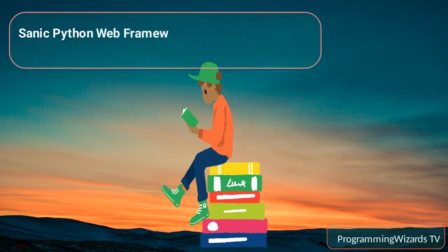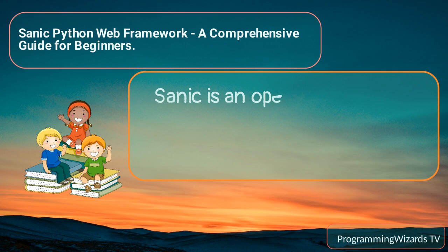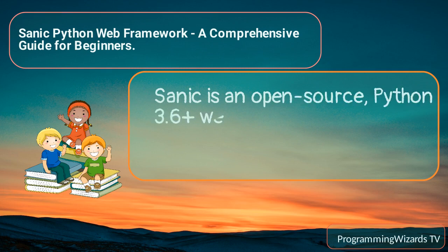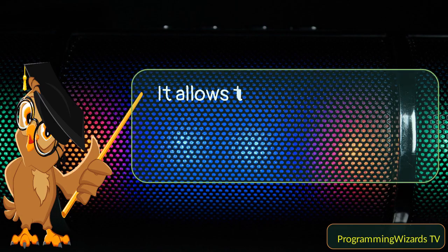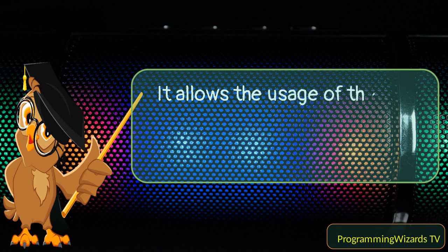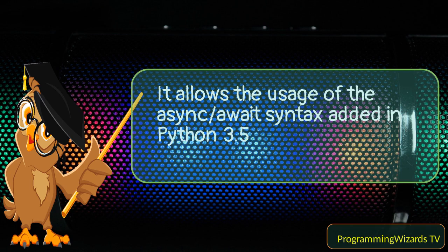Sanic Python Web Framework: a comprehensive guide for beginners. Sanic is an open source Python 3.6+ web server and web framework that's written to go fast. It allows the usage of the async/await syntax added in Python 3.5, which makes your code non-blocking and speedy.